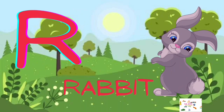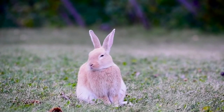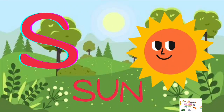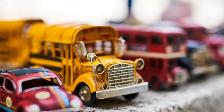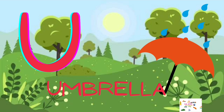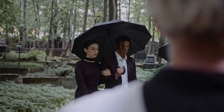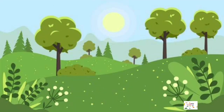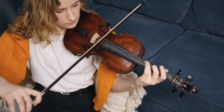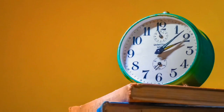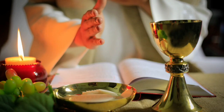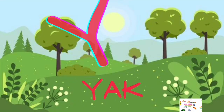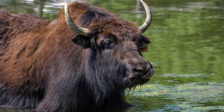Q for Queen, R for Rabbit, S for Sun, T for Toy, U for Umbrella, V for Violet, W for Watch, X for X-Mastery, Y for Wack, Z for Zebra.